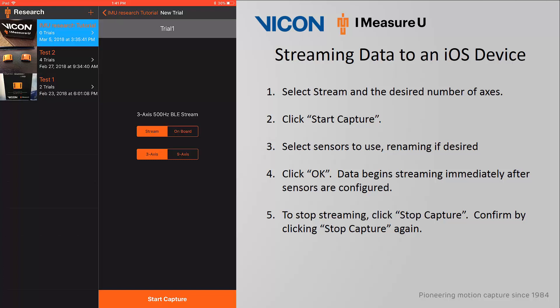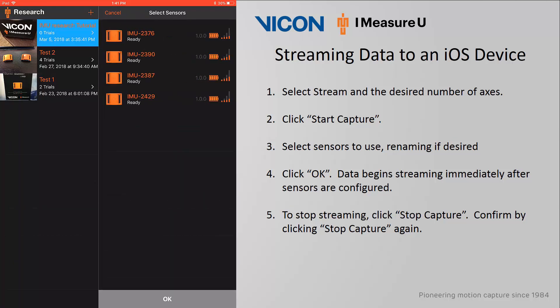In this first example, I will select Stream and choose to record only 3 axes, then click Start Capture. The app will prompt you to select the sensors you want to use. If you do not see any sensors in the list, make sure that Bluetooth has been enabled on your iOS device and that the sensors have been turned on. Each sensor will show its unique identifier in the form of its serial number, its current firmware version, the remaining battery life, and its overall signal strength.